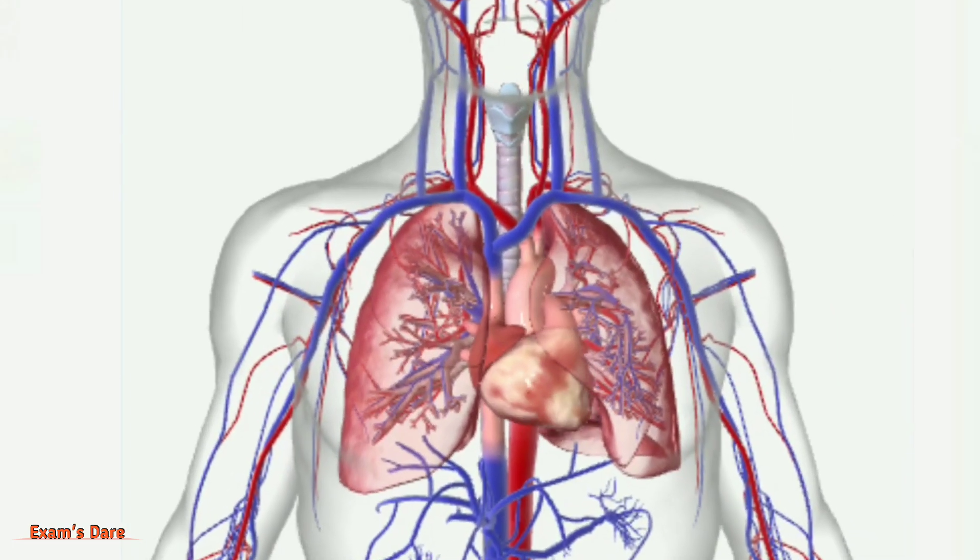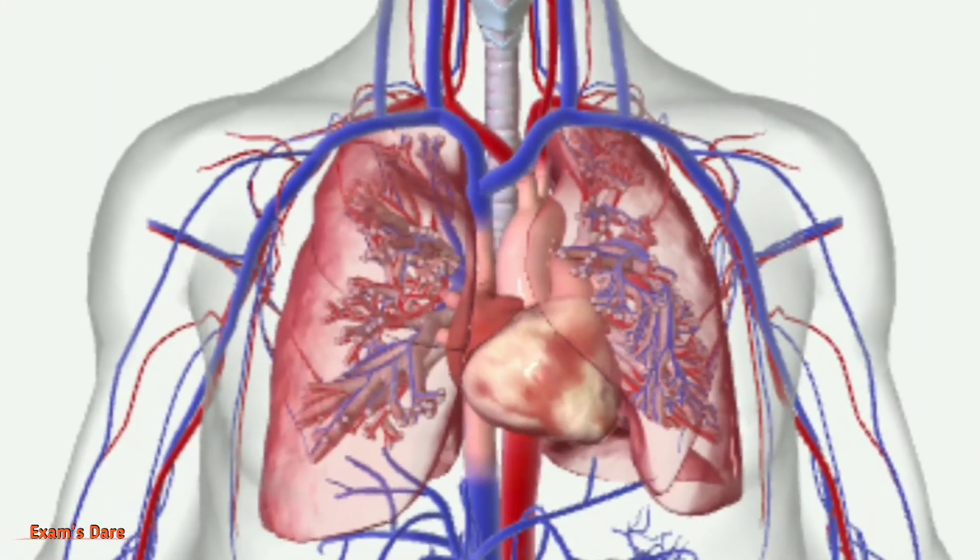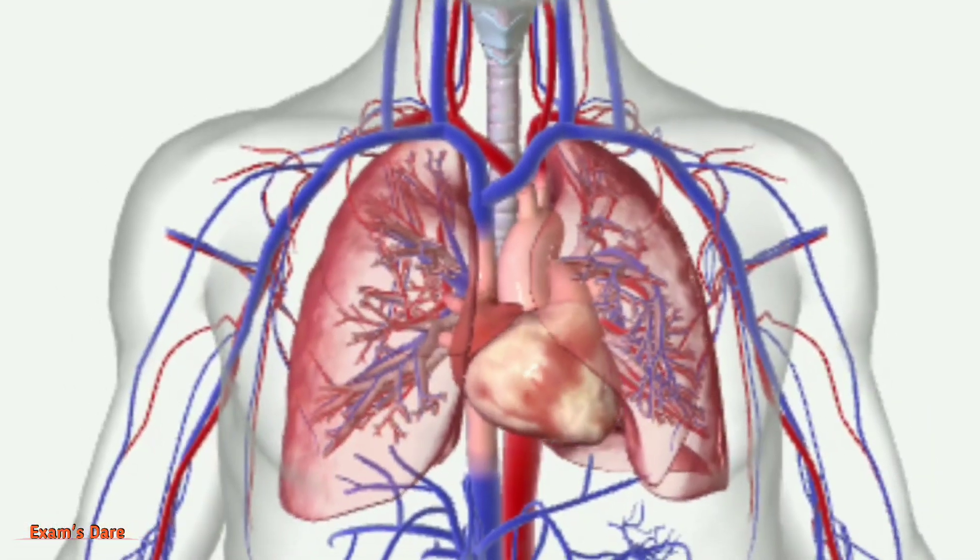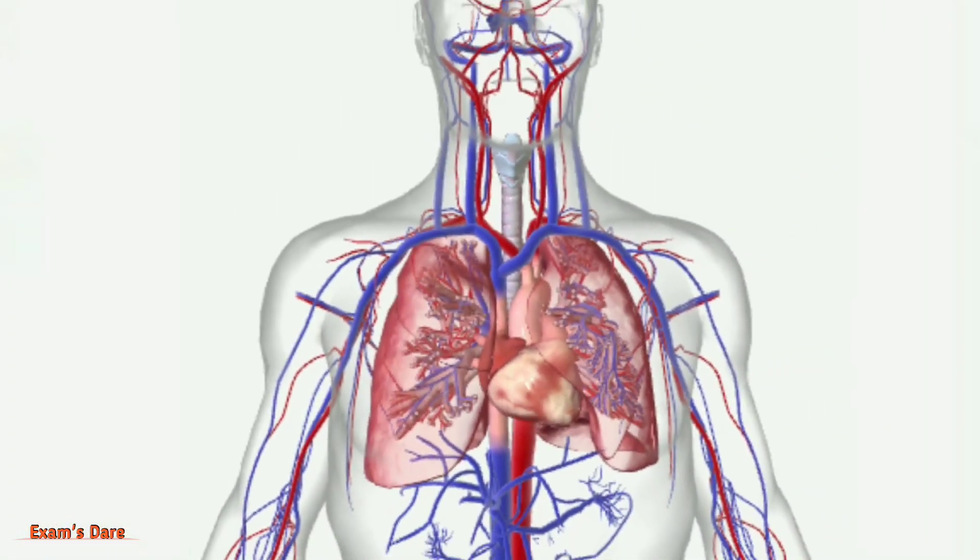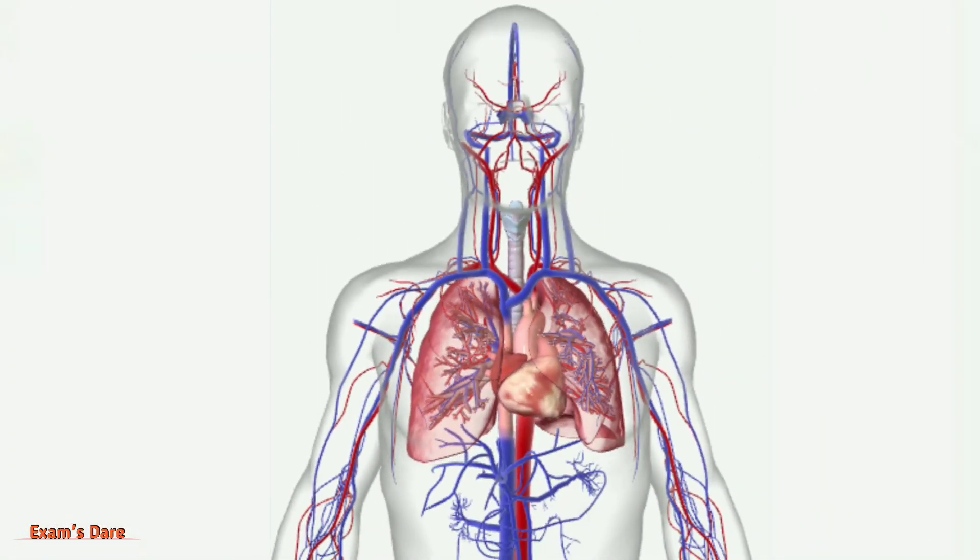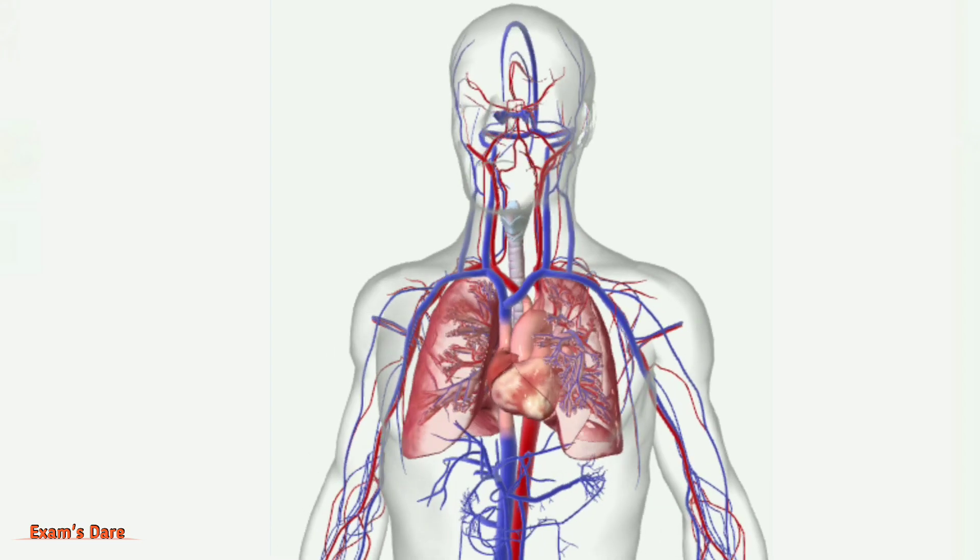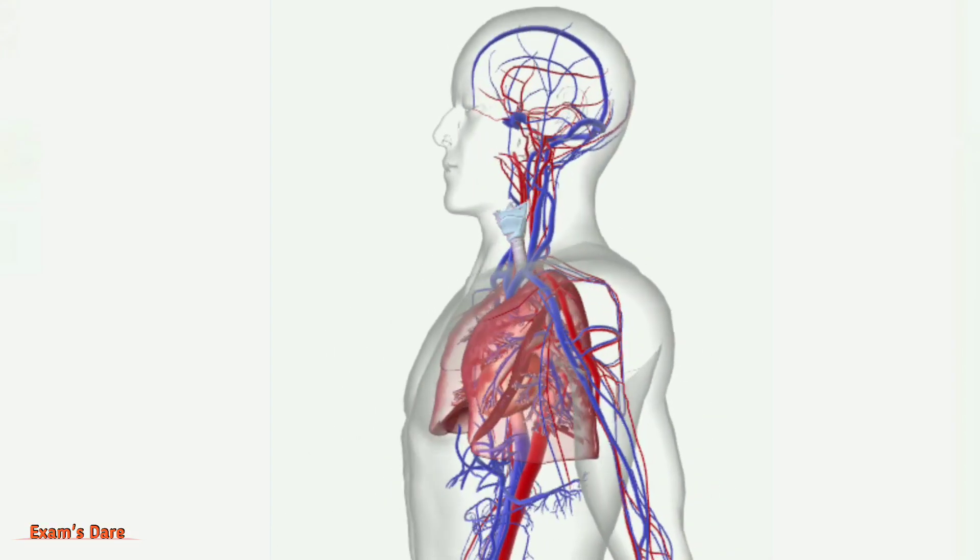Lungs are the major organs of the respiratory system. Lungs are sac-like structures which occupy space in the thoracic cavity and are divided into sections or lobes.